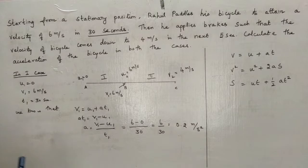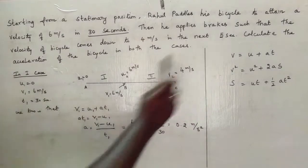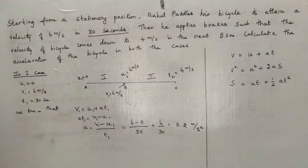Now we have a doubt here. I have the three equations of motion: V = U + AT, V² = U² + 2AS, and S = UT + ½AT². So what equation should I select to find the acceleration? Here we are asked to calculate the acceleration.